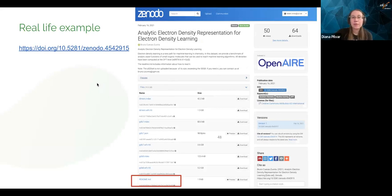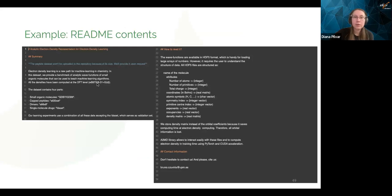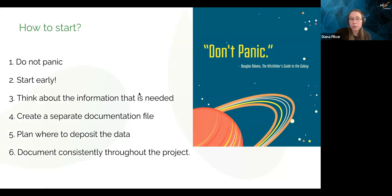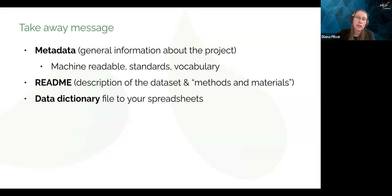Here's another real-life example. If you look inside, it's simple explanations — not four pages, actually one page. So how to start? First, don't panic. Start as early as possible and think of the information that is needed. Create a separate documentation file. If you already know where you'll deposit the data, look at what standards they're using and use the same ones. The key takeaway is: metadata is general information; README has the description of the data set, basically your methods and materials; and data dictionary goes with your spreadsheets.